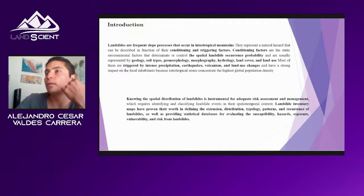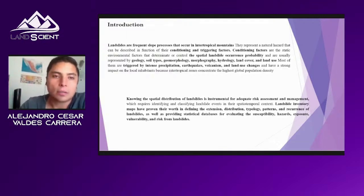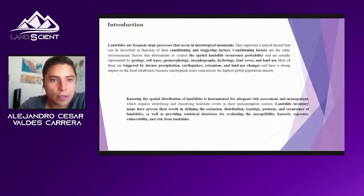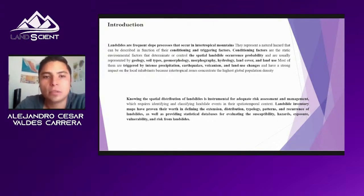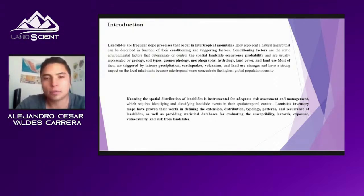As an introduction, we know that landslides are frequent and slow processes that occur in intertropical mountains. We also know about the conditioning and trigger factors. Knowing the spatial distribution of these processes is important for pre-assessment and management, and this is represented on landslide inventory maps.